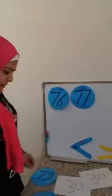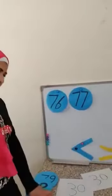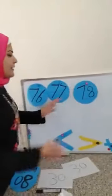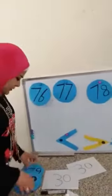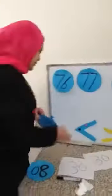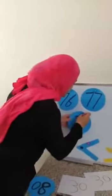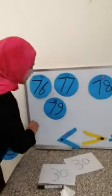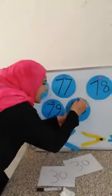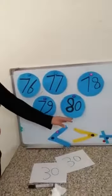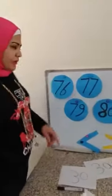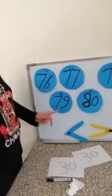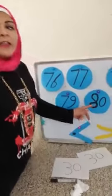After 77, yes, 78. And after 78, of course, it's 79. Excellent. You are super, Keiji. And after 79, of course, it's 80. What is this number? 80. Okay. Let's say them together again. 76, 77, 78, 79, and 80. Excellent, Keiji.